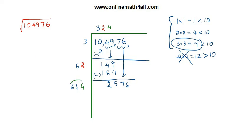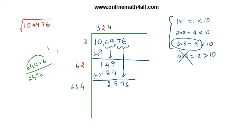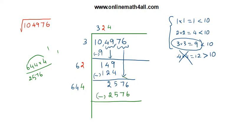Now we multiply six hundred and forty-four by four: four times four is sixteen, carry one; four times four is sixteen, plus one is seventeen, carry one; four times six is twenty-four, plus one is twenty-five. So we get exactly two thousand five hundred and seventy-six. So six hundred and forty-four times four equals two thousand five hundred and seventy-six. We subtract two thousand five hundred and seventy-six from two thousand five hundred and seventy-six and get zero.